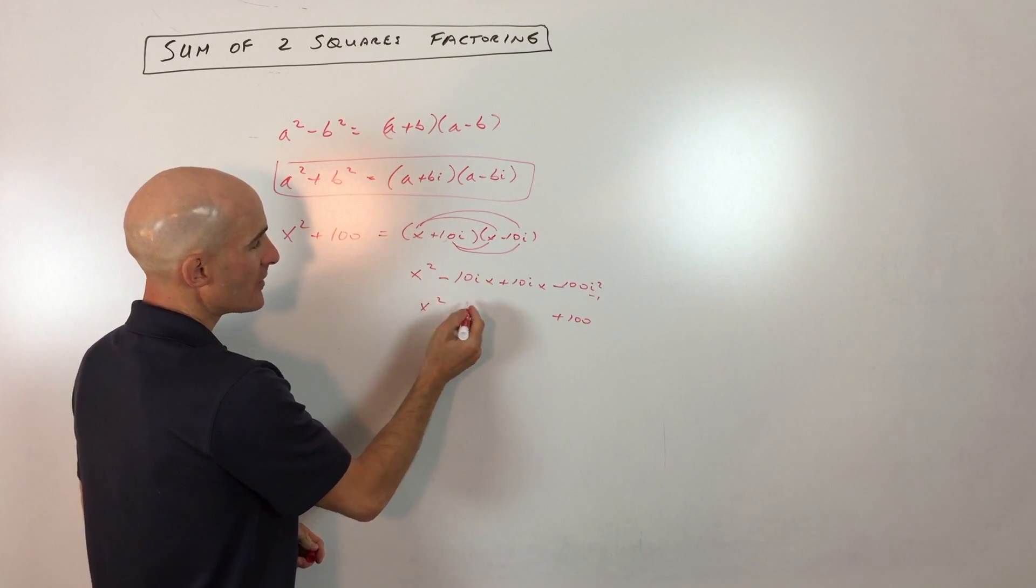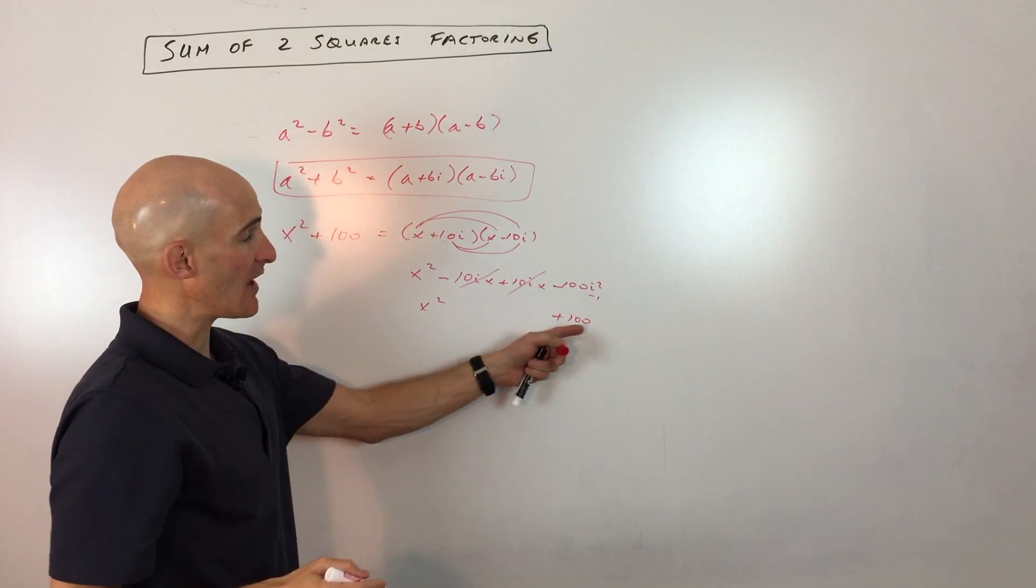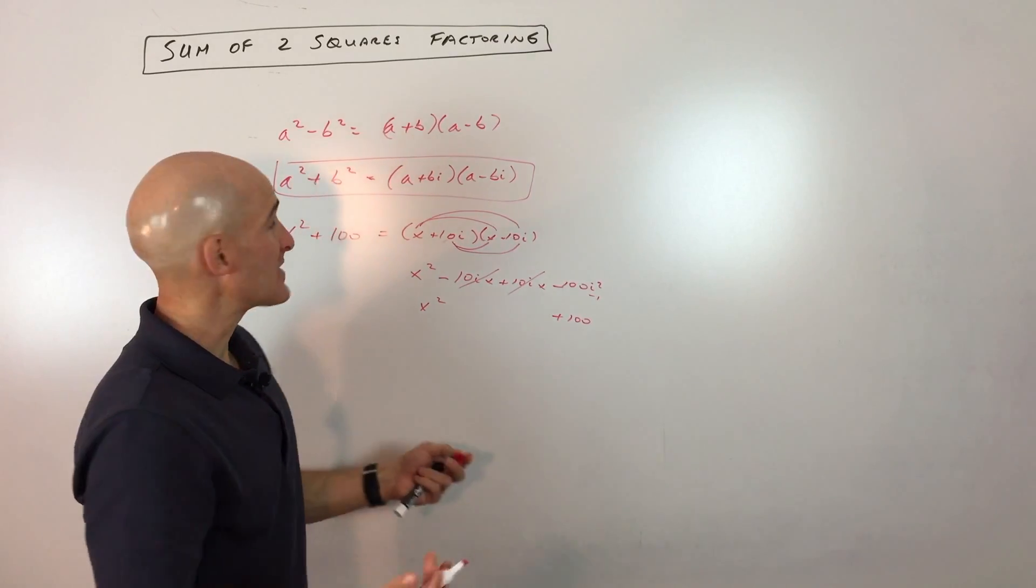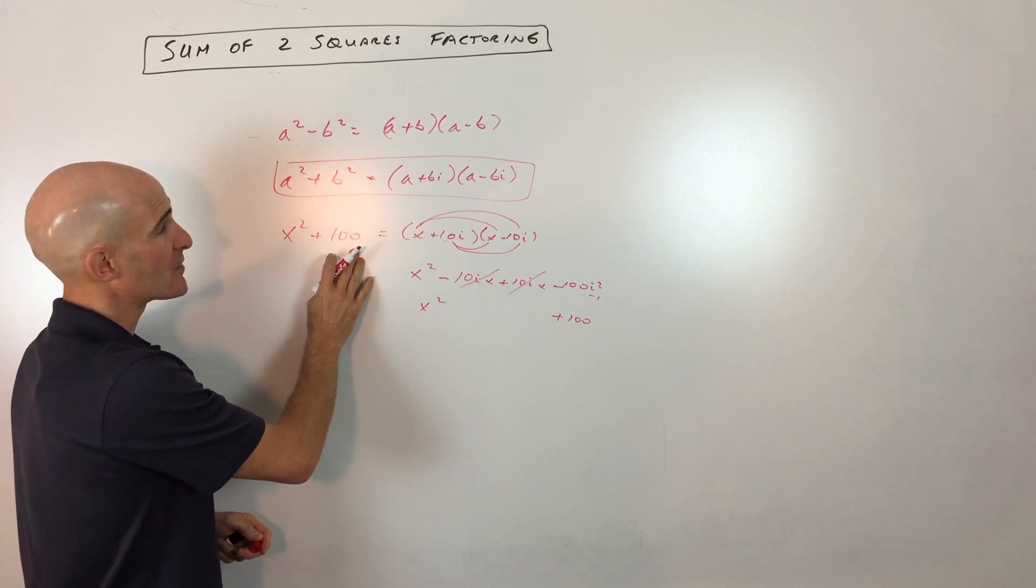Here we have x squared, and we have negative 10ix and positive 10ix. Those are canceling, so we're left back with x squared plus 100. So that's the key. If you know the formula, you've got it. It's basically recognizing that you have a perfect square plus a perfect square.